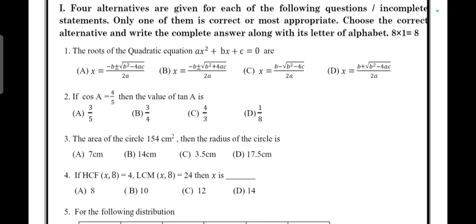The roots of the quadratic equation ax² + bx + c = 0. Answer is -b ± √(b² - 4ac) / 2a. Answer is A.